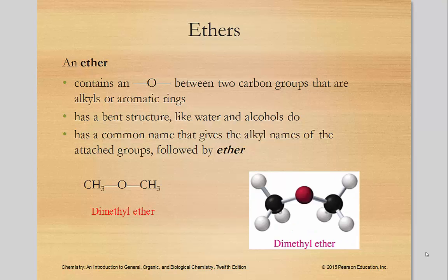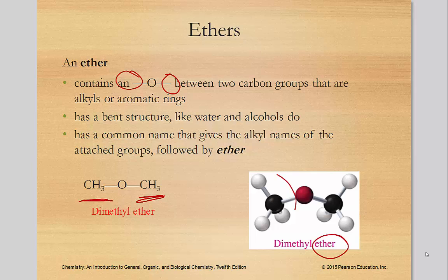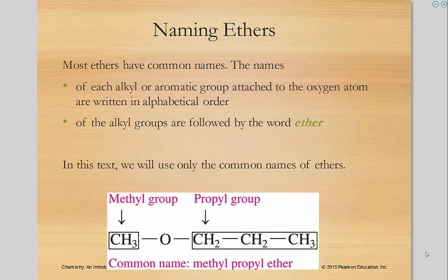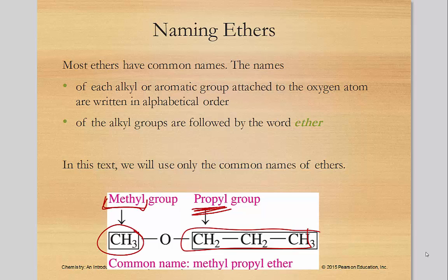Let's move to ethers. An ether is an oxygen surrounded by carbons, and it has a bent structure just like water and alcohols do. Most have common names that give the alkyl groups attached, followed by 'ether.' So here's a methyl group on either side — CH₃–O–CH₃ — so that's dimethyl ether. You name each side as if it's a substituent coming off the oxygen, which is why you end it in -yl. Here, three carbons is propyl and one carbon is methyl, so alphabetically: methyl propyl ether. Always put the groups in alphabetical order.